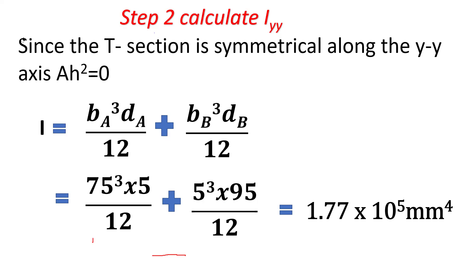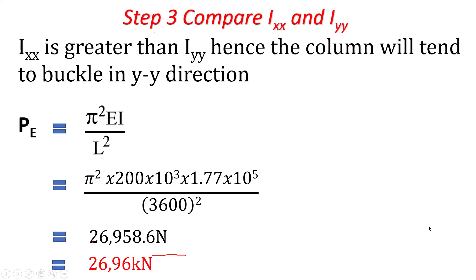Now let's compare. Ixx is greater than Iyy, hence the column will tend to buckle in the y-y direction. So Ixx will offer more resistance to buckling. So we design using the lower value, and hence we are going to use Iyy.